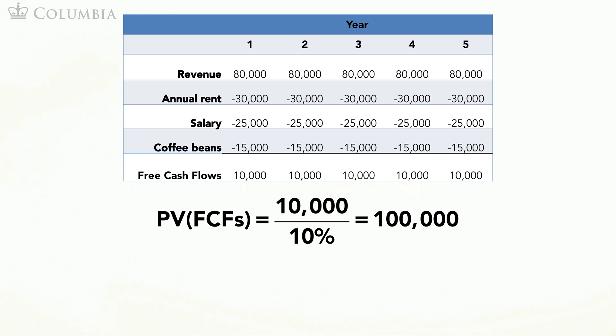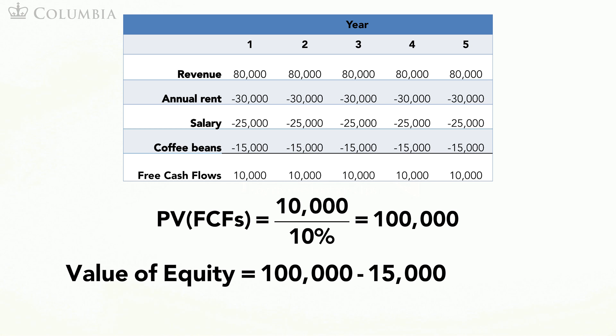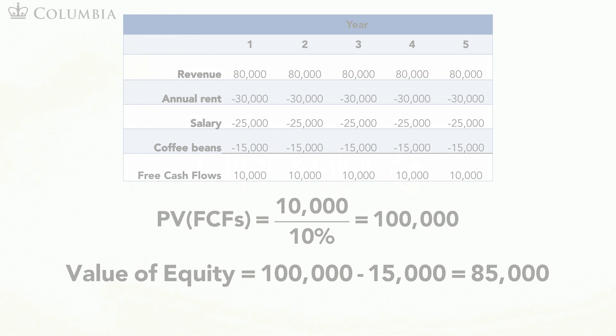This value belongs to both equity and debt holders. But we know that debt holders own 15,000 of these 100,000, leaving 85,000 of value to equity holders. Note that we have obtained the same answer as with the cash flows to equity method.